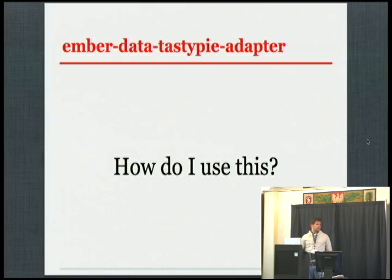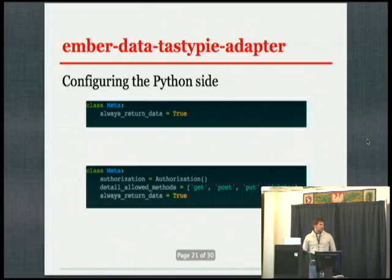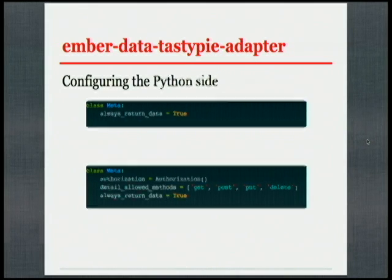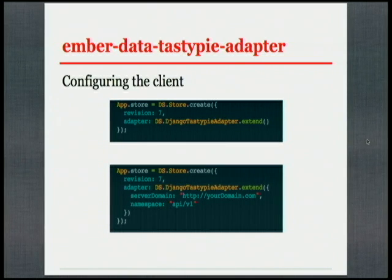If you want to use that, what do you still have to change in your system? Almost nothing. On the Python side, you always need to return data in your resource meta — that's something you have to add if you want to create or update resources; if you're only reading data you don't need that. You'll also need to deal with authorization in TastyPie, but that's something you'd have to do using a TastyPie interface anyway. On the client, if you go to the Ember.js documentation, this is how you create a store. By default you'd include a DS.RESTAdapter; instead of that, you just use this one and it works. You can add parameters — for cross-domain you can use the server domain parameter, or give it a different namespace, and it just works.